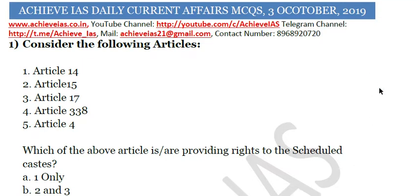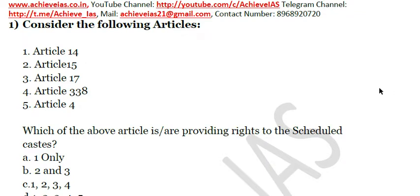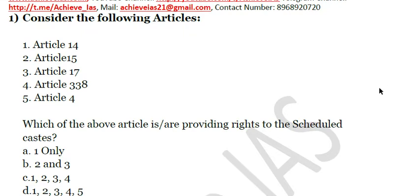The first question is: consider the following articles — Article 14, Article 15, Article 17, Article 338, and Article 4. We have to choose which of the above articles provide rights to the scheduled castes.